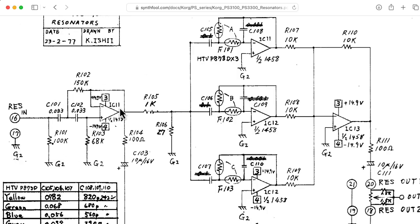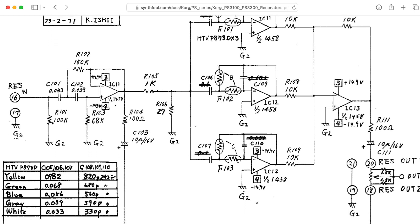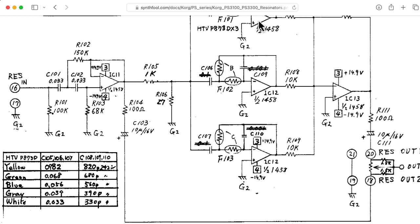So the first thing we hit is this second order high pass Sallen-Key filter. I'll come back to that later. The signal is then split into two paths. One of the paths goes through these three bandpass filters in parallel, and the results of those bandpass filters are added up.